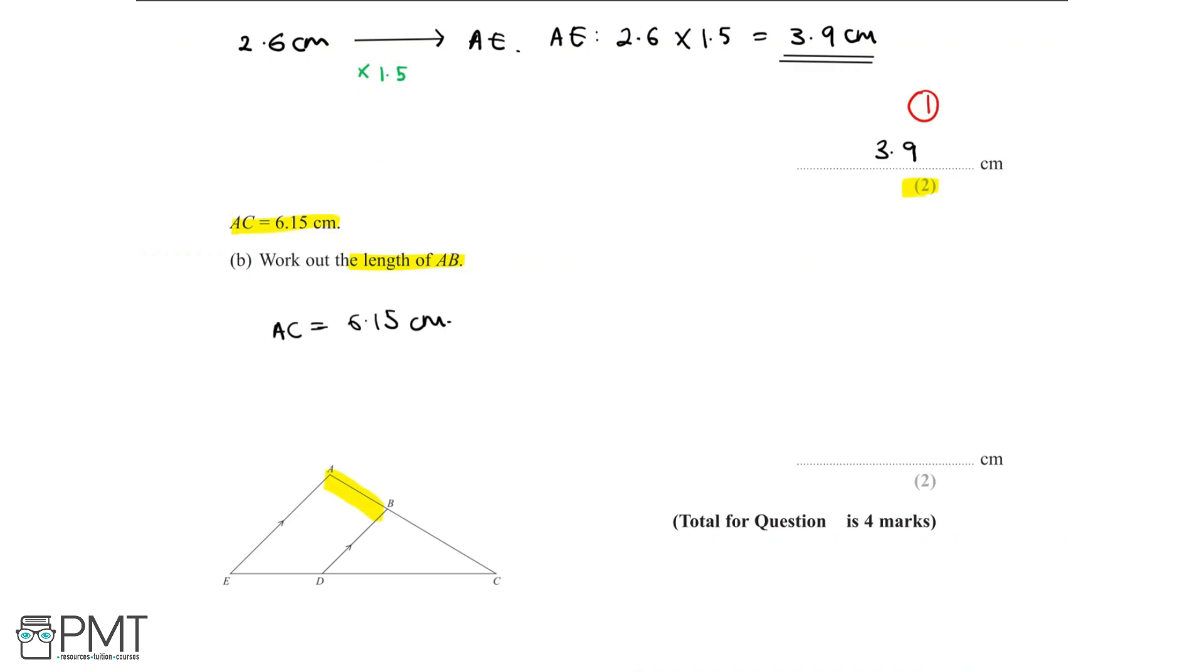But what we can do is find the length BC, because BC is part of triangle DBC. And we'll highlight the length BC in blue. So in order to find the length BC, well we know that to get from BC to AC, we multiply by 1.5.